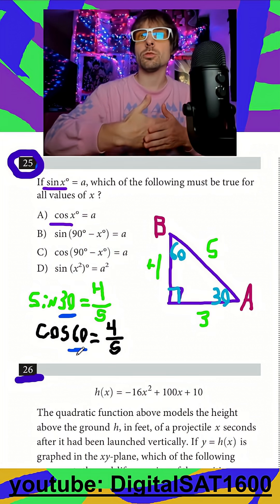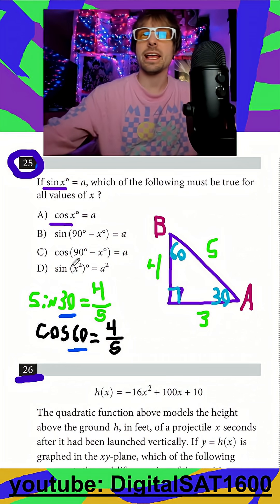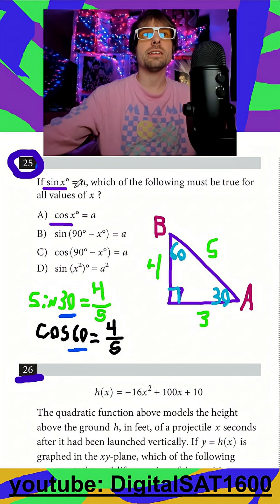Cosine of an angle is going to be equal to the sine of 90 minus that angle. So if you ever see a problem like this, since I know that the sine of x is A,